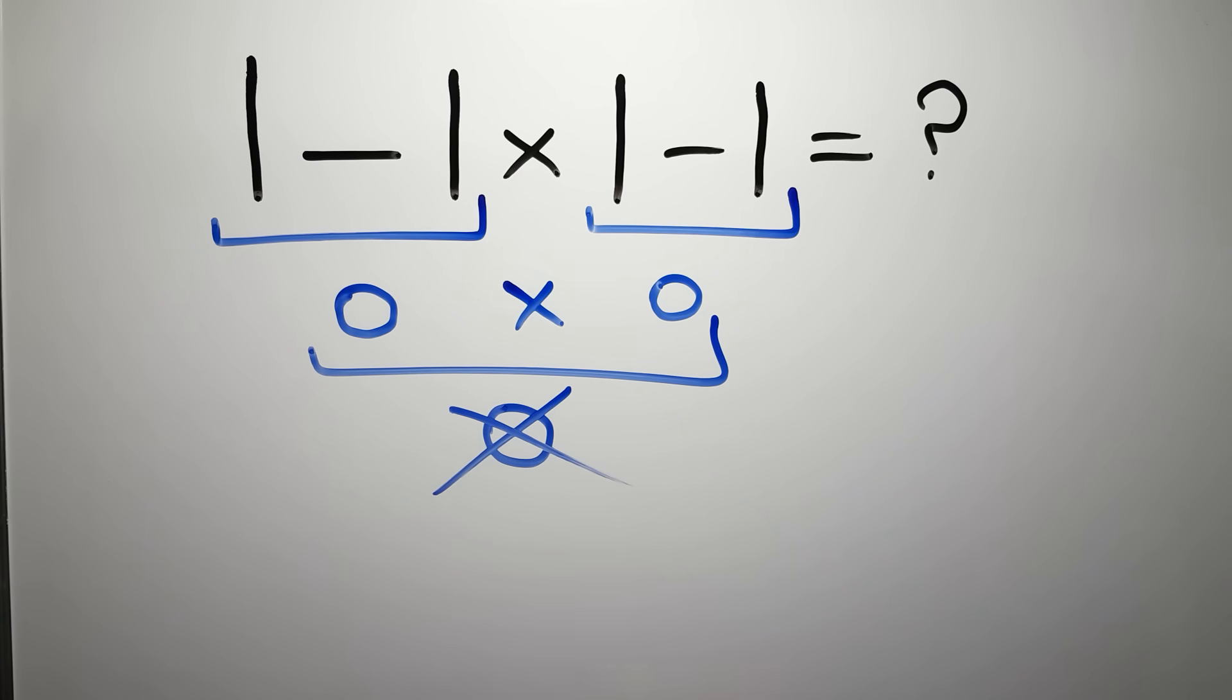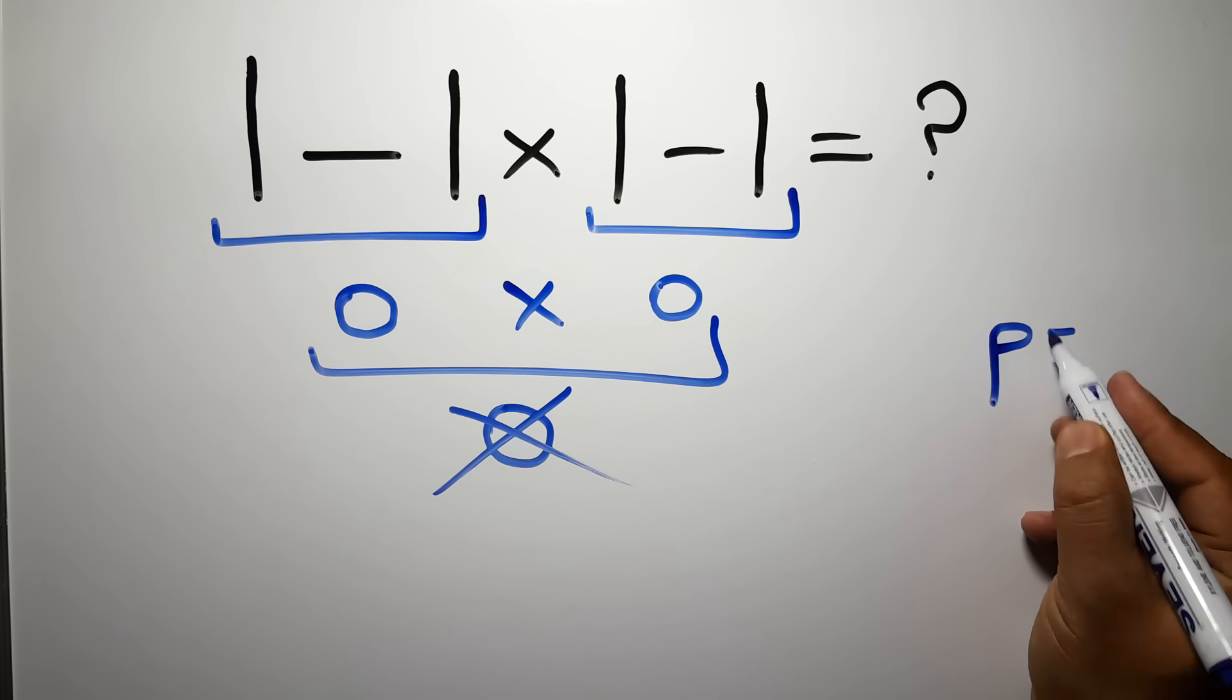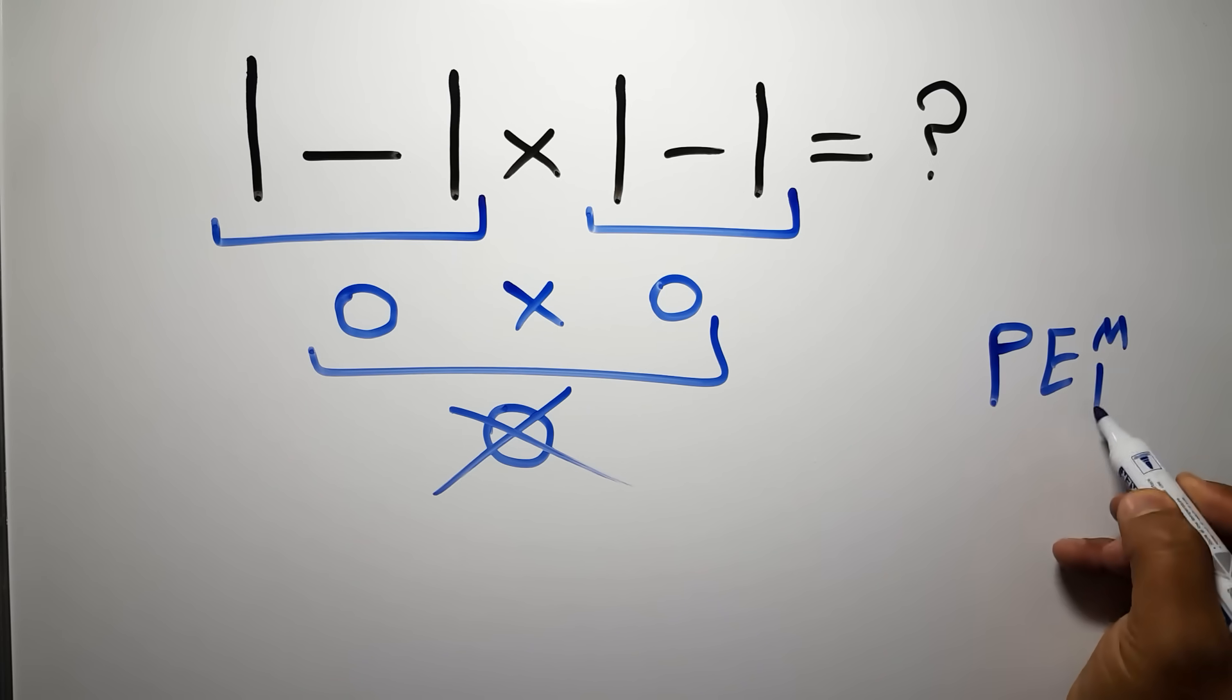Because according to the order of operations, first we have to do parentheses, then exponents, then multiplication or division.